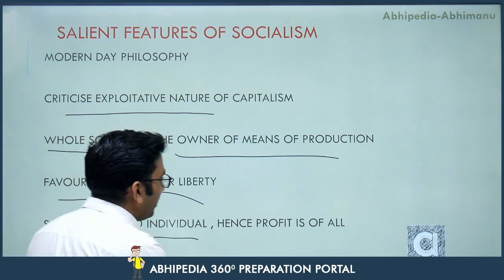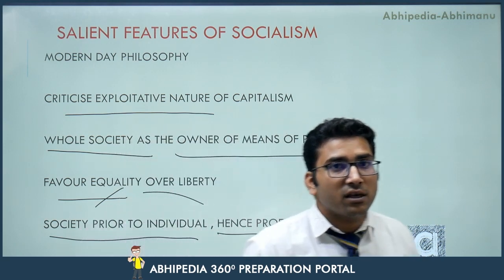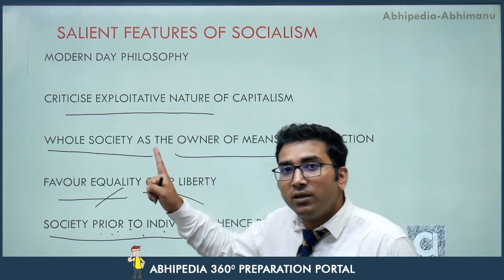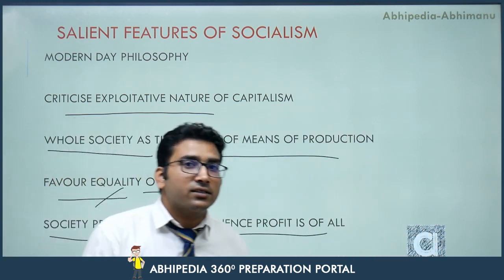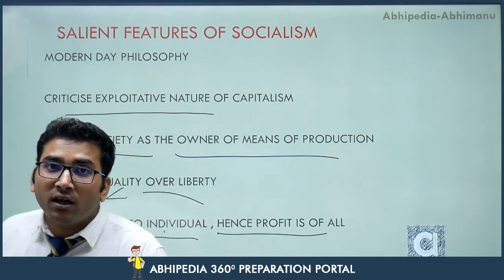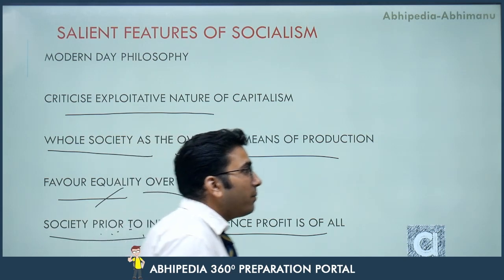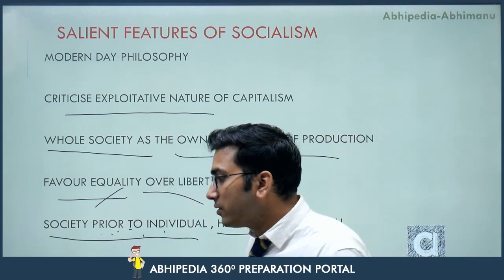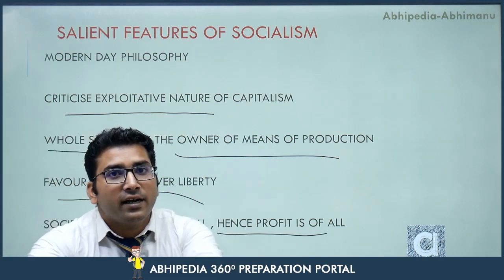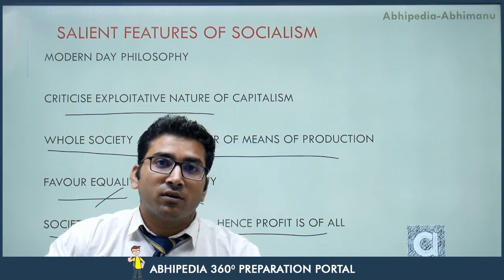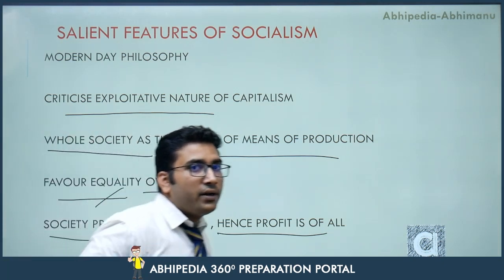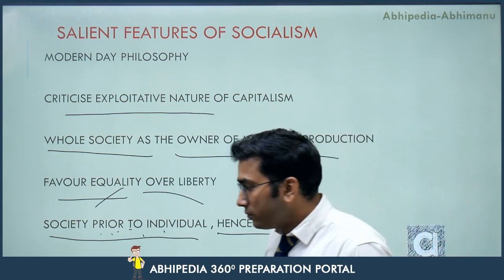Socialists also say that society is prior to the individual, hence profit is for all. They hold an organic view of society — society comes before the individual. For capitalists, society is merely a sum of individuals, but for socialists, society is organic, created by the collective wisdom and wishes of the people. Society represents collective happiness and wisdom, and therefore profit should be distributed equally among all constituent parts of society.